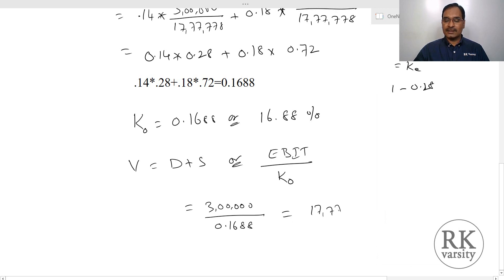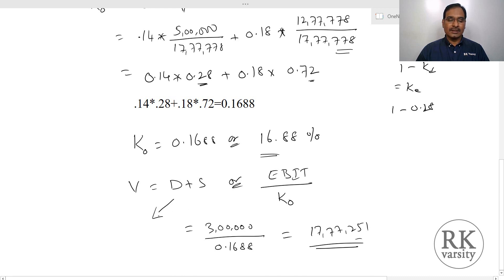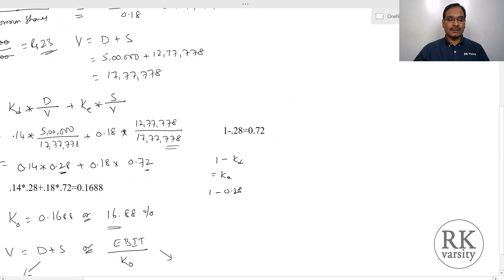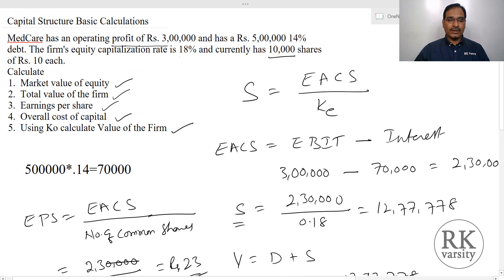This slight variation of 17,77,251 versus 17,77,778 is due to rounding of decimal values — we rounded to 0.28, 0.72, and 16.88%. If you consider complete decimal values, the value of the firm obtained using both equations remains the same. So these are the basic calculations which we frequently use in capital structure theories. Thank you for watching the lecture.